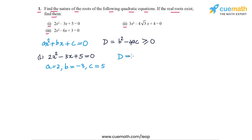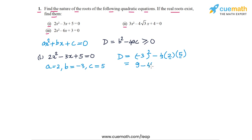Now let's calculate the discriminant. The discriminant of this equation is b² = (-3)² minus 4ac, so minus 4 times a which is 2 times c which is 5. This is equal to 9 minus 4 × 2 × 5, which is 9 minus 40, or -31, which is less than 0.